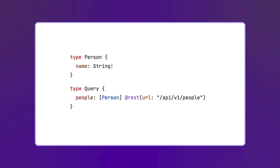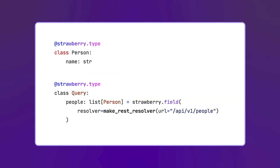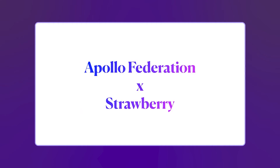Previously we mentioned Strawberry, which is a code-first library. Does it still make sense to use schema directives for code-first libraries? When dealing with code-first frameworks, you don't really need to use directives if you need reusable ways to define resolvers or change the schema. Instead of creating a custom resolver for people, we can use a function that generates a resolver for us, without the extra step of adding a directive to the schema and defining a transformation function. So does it make sense to talk about schema directives in code-first frameworks? To answer that, let's start by seeing how Apollo Federation in Strawberry works.